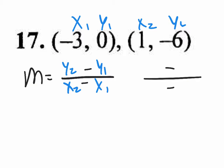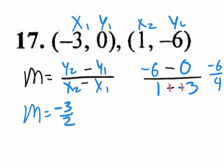Let's plug in our y2 value, which is negative 6. Our y1 value, which is 0. Our x2, which is 1. Our x1, which is negative 3. Minus minus, changes to plus plus. Our slope will be negative 6 over 4. And this one would be negative 3 over 2 when you reduce it. So there's your slope.